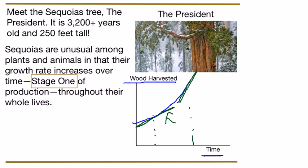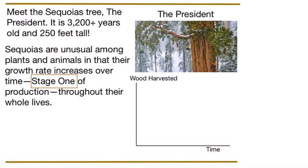This means when you give the tree a little more time to grow when it's old, you get a lot more wood than when you give it a little more time when it's young. This is stage one of production, where the productivity of an input is increasing the more of that input you use.